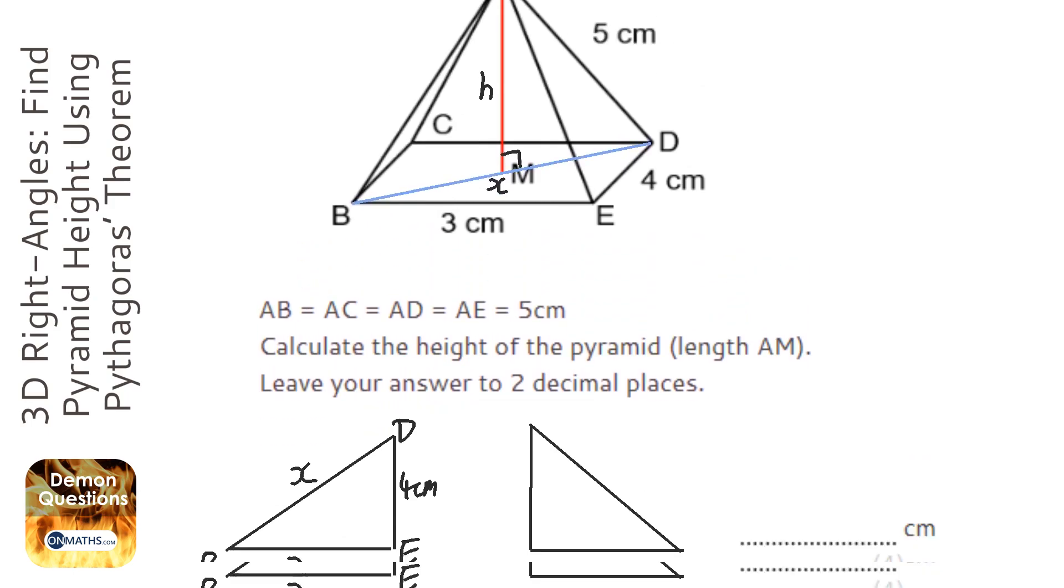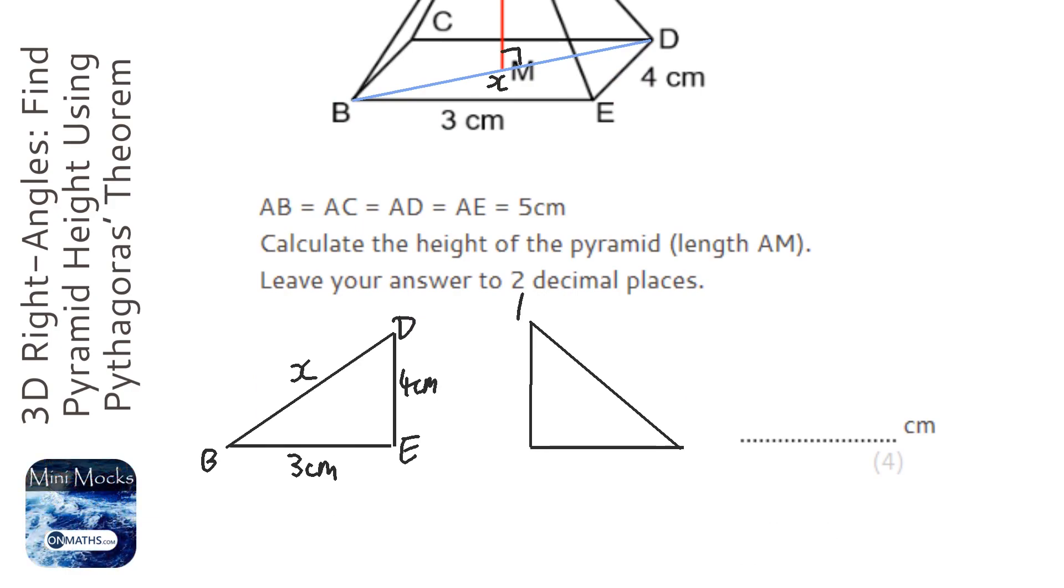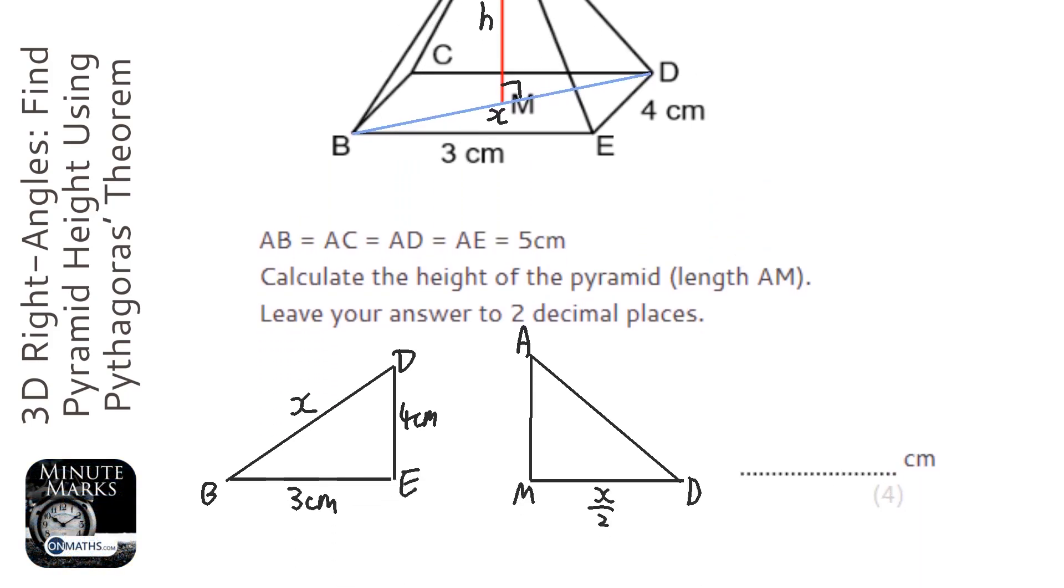And then we're going to work out what the height is. So it's A at the top, is it? Yeah. So it's AMD. Now we know this one at the bottom is going to be half of X, and we know at the top it's 5cm. And this one we're just going to call H.